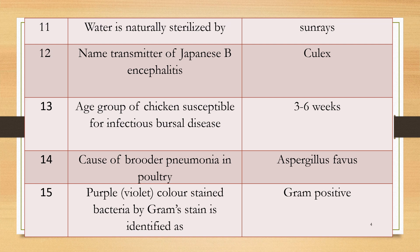Question 13: Which age group of chickens is susceptible to infectious bursal disease, or Gumboro disease? Answer: Chickens of 3 to 6 weeks of age are susceptible to Gumboro disease.